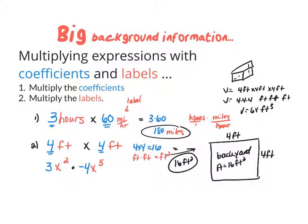The last general example is something we've seen with polynomials: 3x² times −4x⁵. Multiply their coefficients: 3 times −4 is −12. Multiply their labels: x squared times x to the fifth is x to the seventh. So the final answer is −12x⁷.